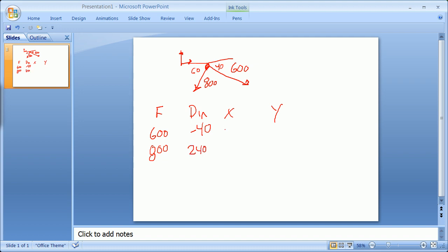Which means that your x component is 600 times the cosine of minus 40, and your y component is 600 times the sine of minus 40, and in this case it is 800 times the cosine of 240, and this is 800 times the sine of 240.